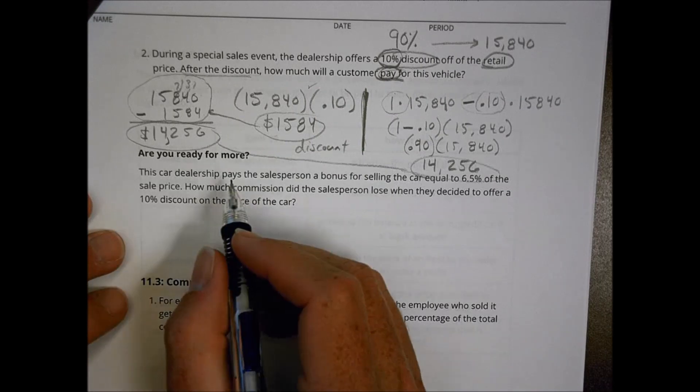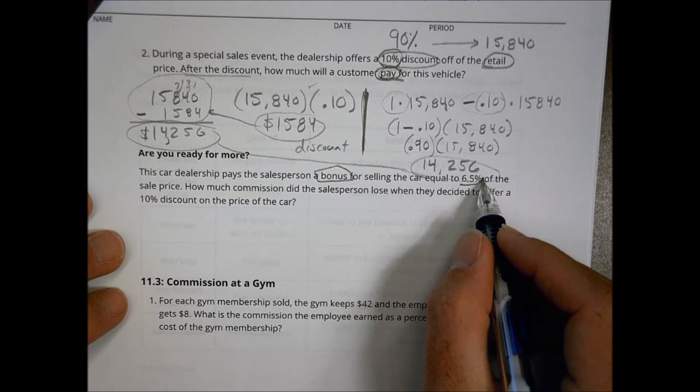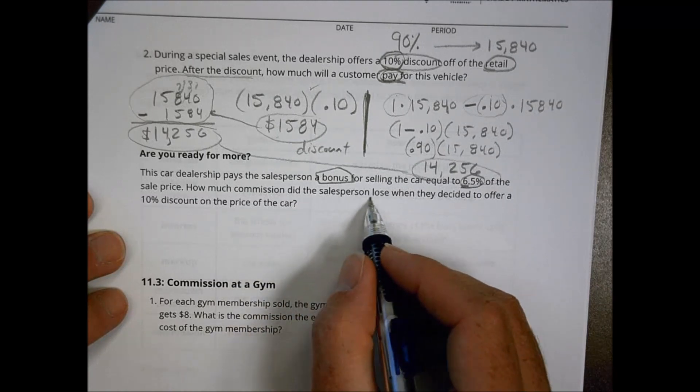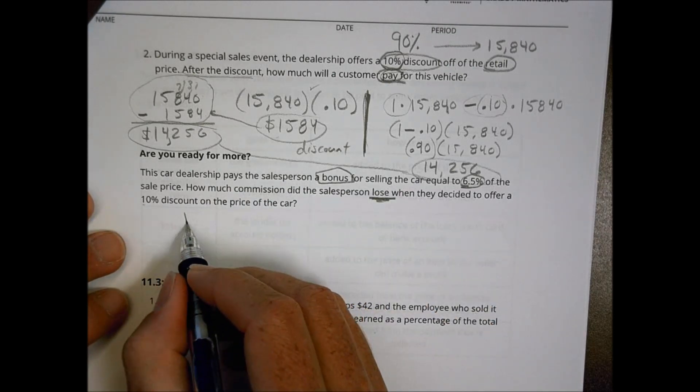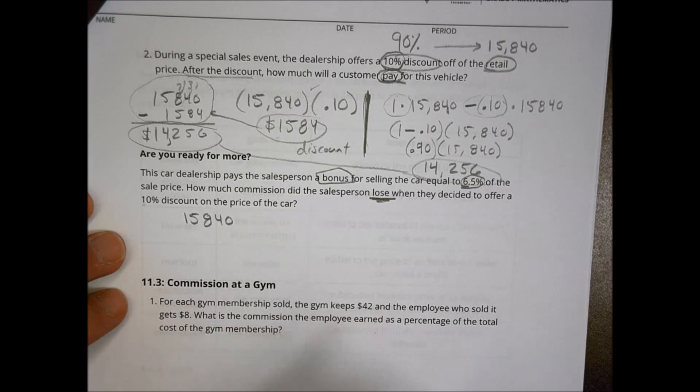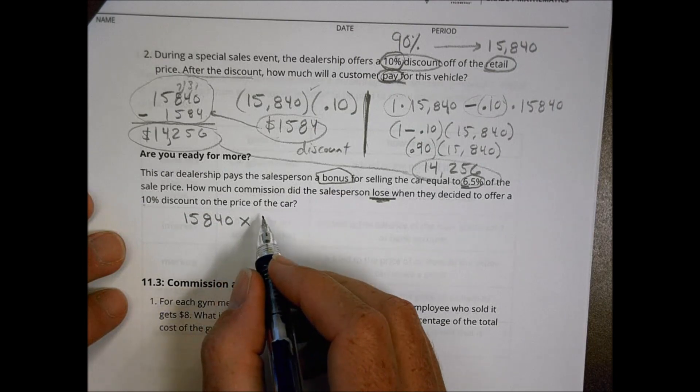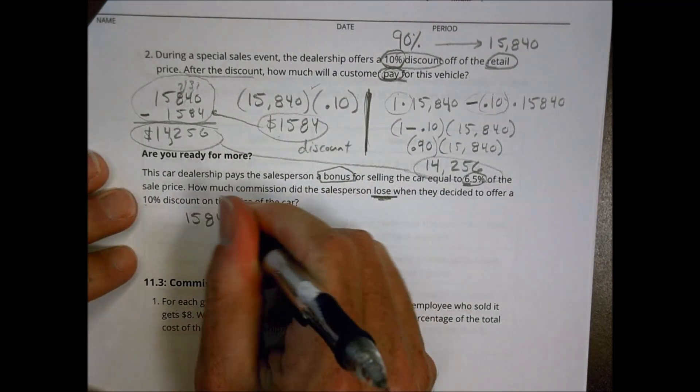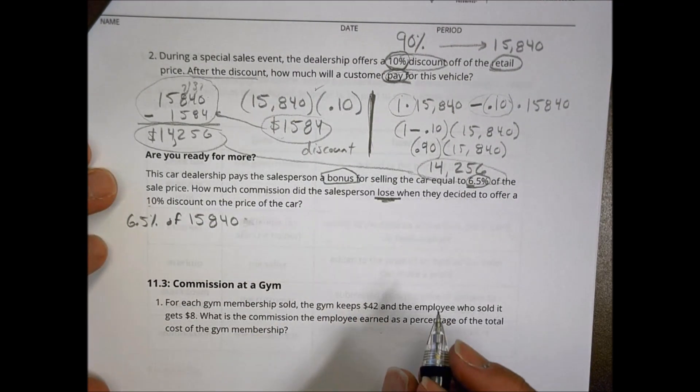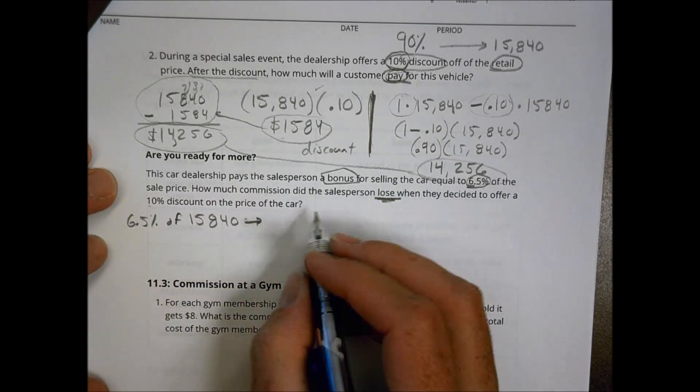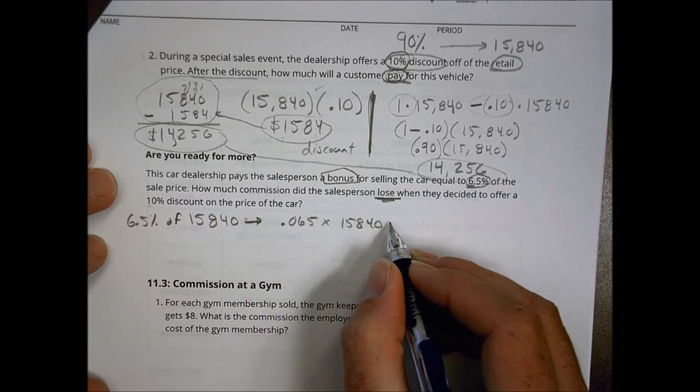Are you ready for more? The car dealership pays the salesperson a bonus for selling the car equal to 6.5% of sales price. How much commission did the salesperson lose when they decided to offer a 10% discount? So if I'm thinking about both ways, if he sold it for 15,840, if he did the retail price, he would have had a bonus of 6.5% of whatever that is. So 6.5% of 15,840. That's what he could have had, if there was no sale. So that becomes 0.065 times 15,840.